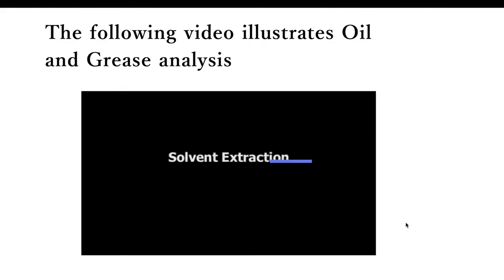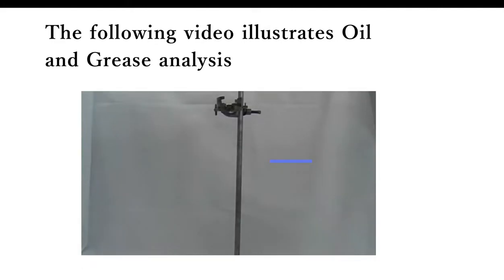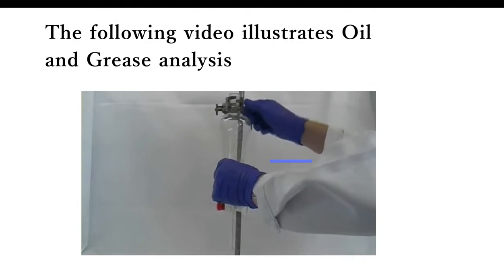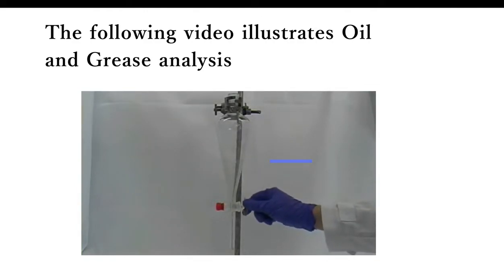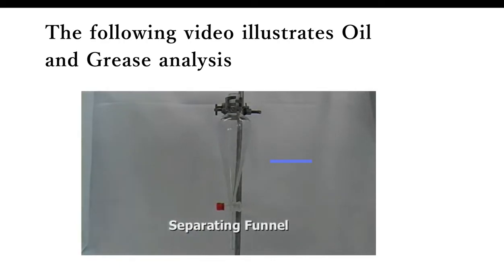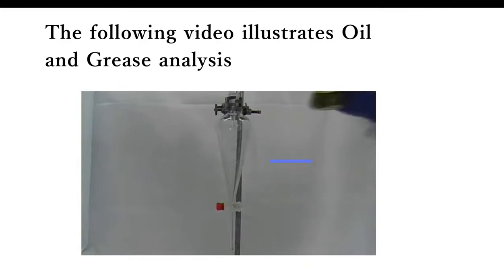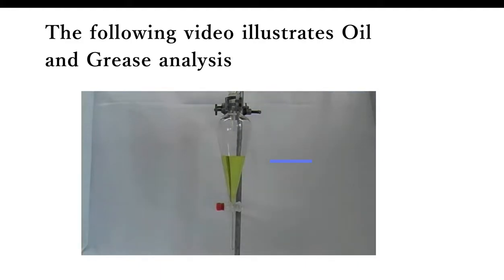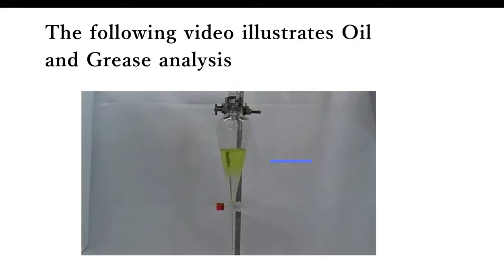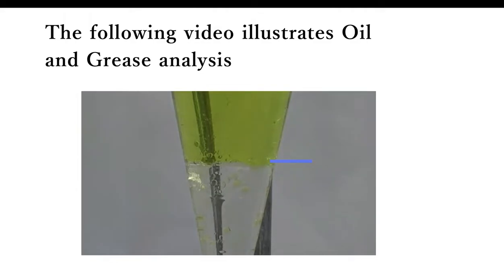Welcome to our solvent extraction video. In this video I will demonstrate how to use a separatory funnel to separate two immiscible solvents. First, clamp the separatory funnel firmly into a retort stand and make sure the tap at the bottom is closed so as not to lose any solvents. You may want to use a funnel to fill the separatory funnel. We first add our organic phase, then our aqueous phase, which is used for the extraction of any solute we don't want in our organic phase. You can see the two layers separated by the interface.